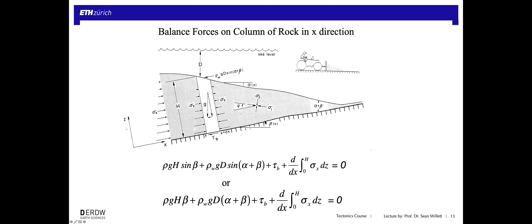We want to balance the forces acting on this column of rock. This is a general analysis — you should get the same answer no matter where that column is located in the wedge. The simplest force is gravity: if this column has some density, gravity acts in the downward direction. That vector G can be decomposed into a Z component and an X component. We're just going to worry about the forces in the X direction — the Z direction is basically rock pressure and doesn't matter too much.